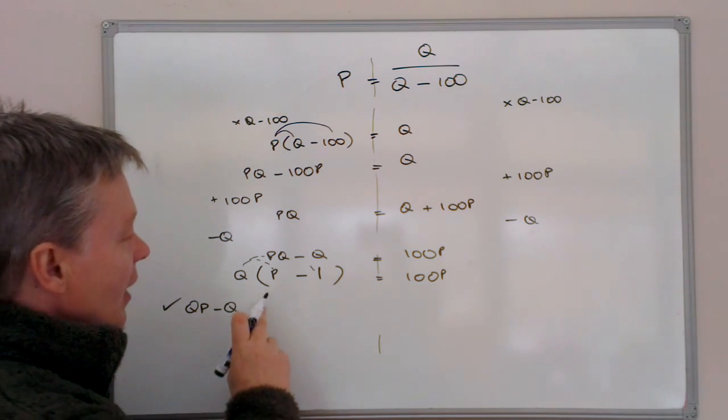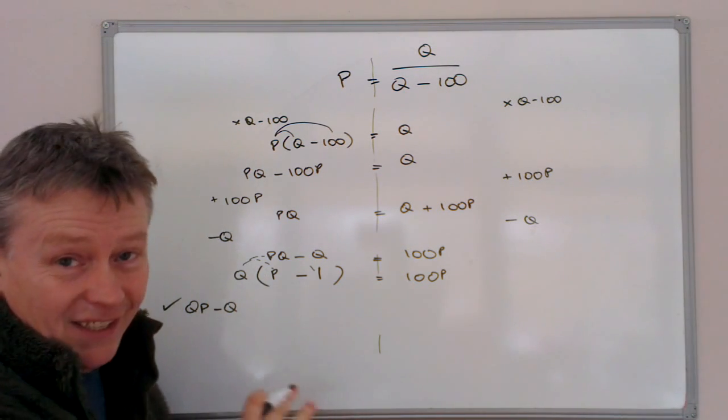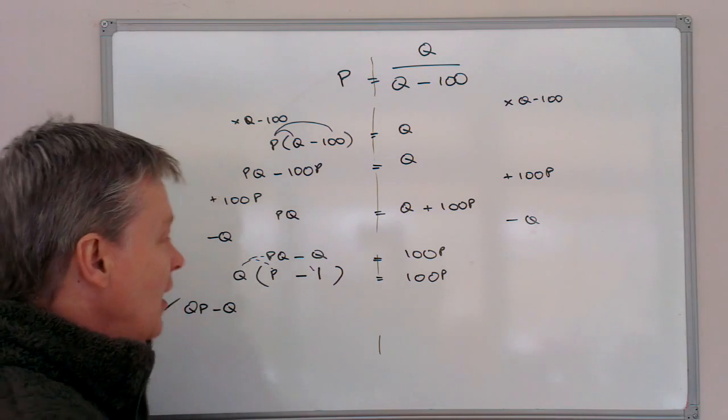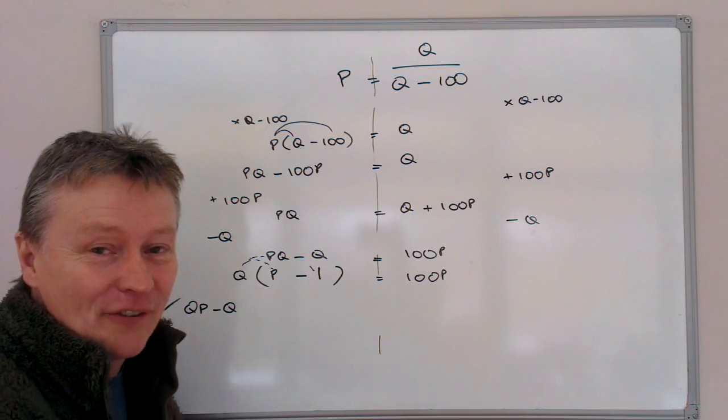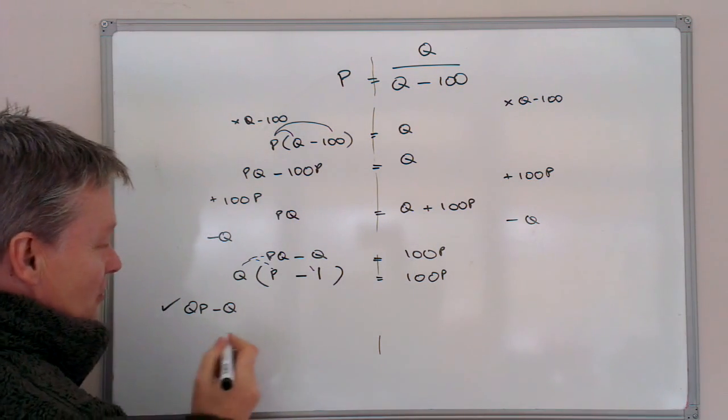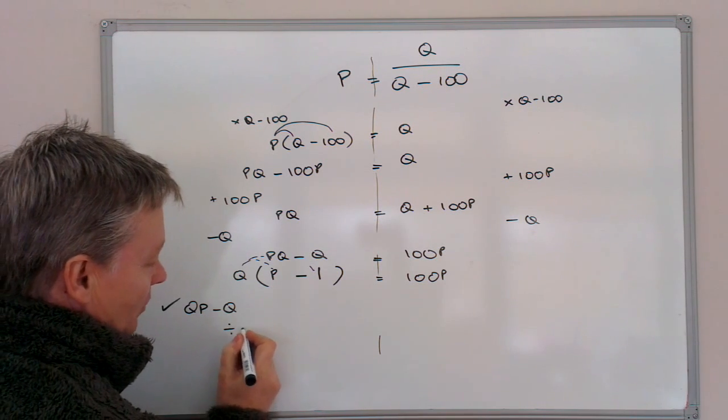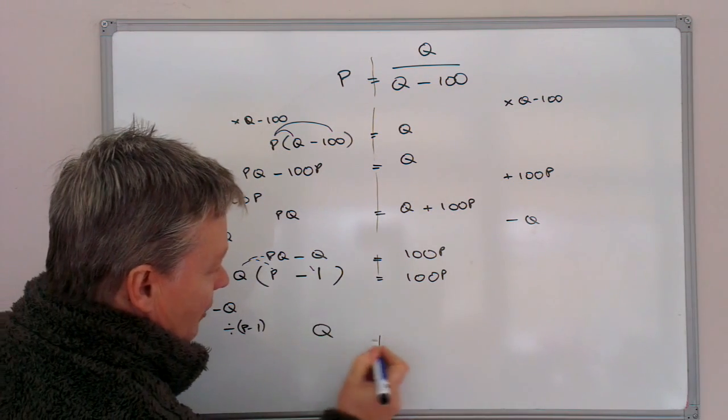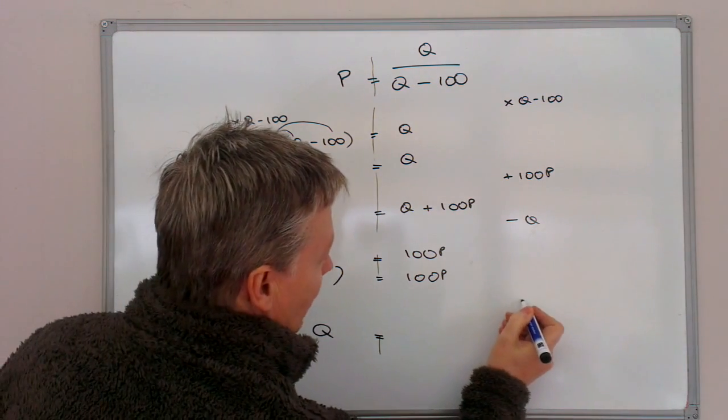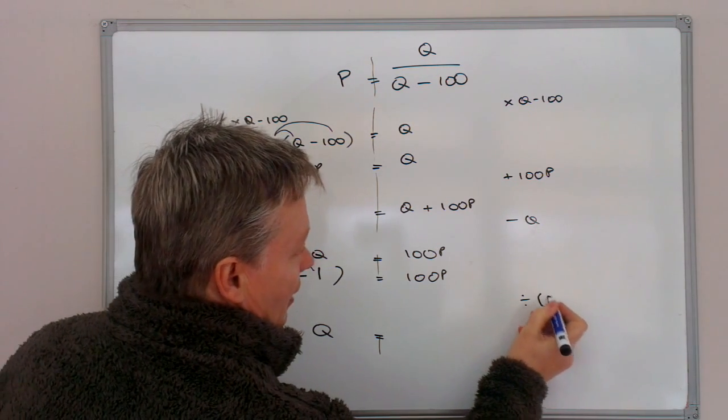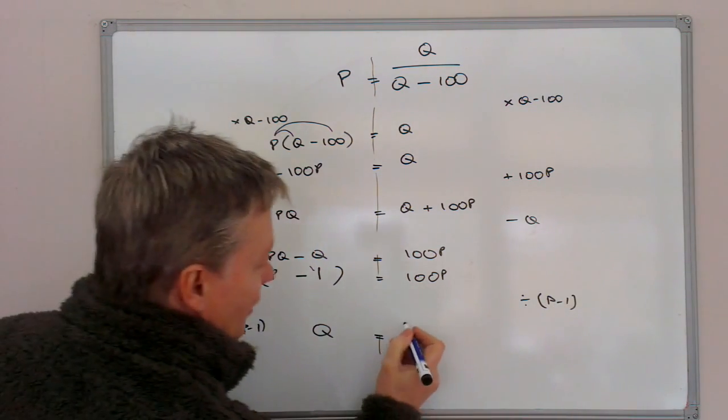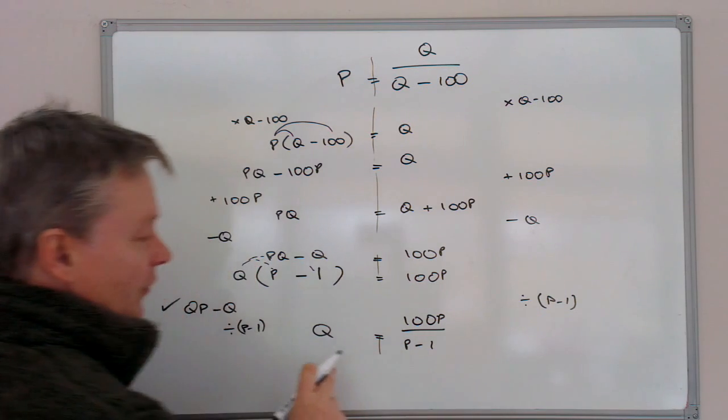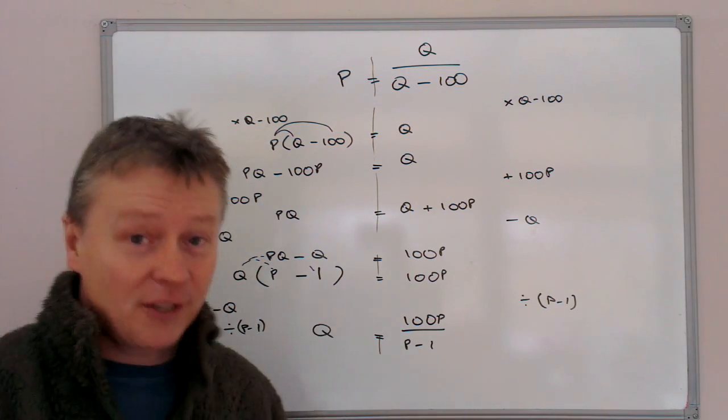Well, that's great, because now, because I've got Q times the bracketed terms, if I divide both sides by P minus 1, it means then, finally, I'm going to be left with Q on one side. So what I'll do is, I'm just going to tell the examiner that I'm going to divide by P minus 1. So on this side, I've got Q on its own, and on this side, bearing in mind I have to do exactly the same, so divide by P minus 1. So on this side, I'm going to have 100P divided by P minus 1. And that would be the way then to make Q the subject of the formula.